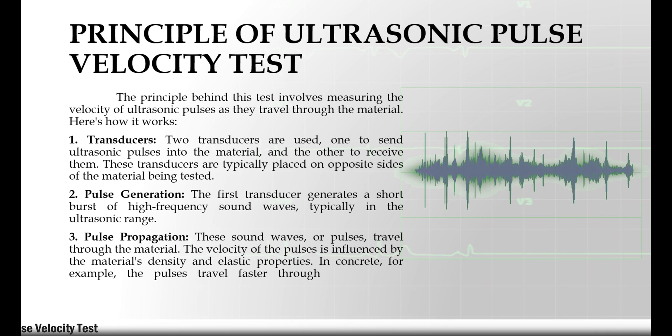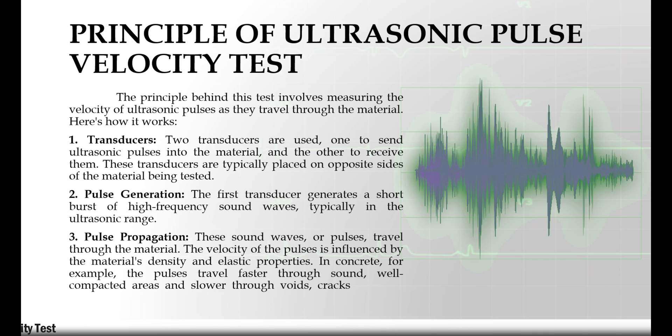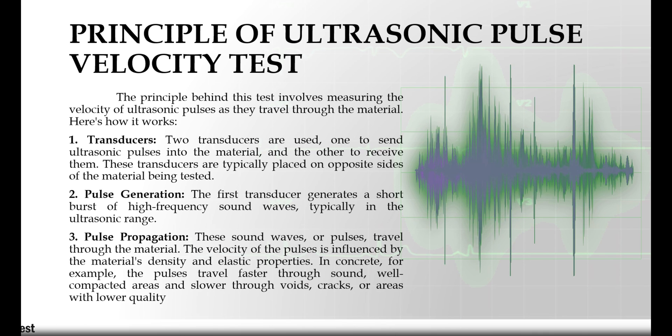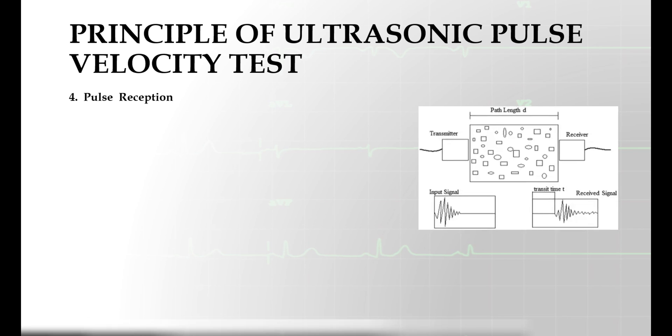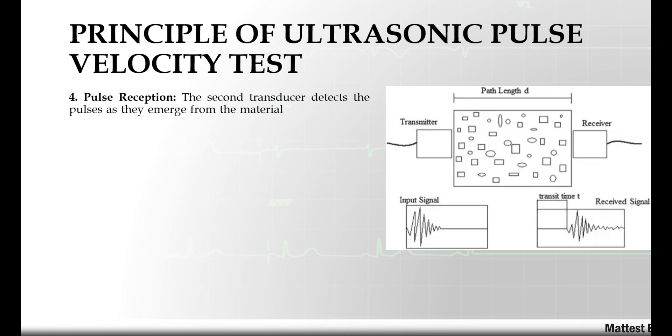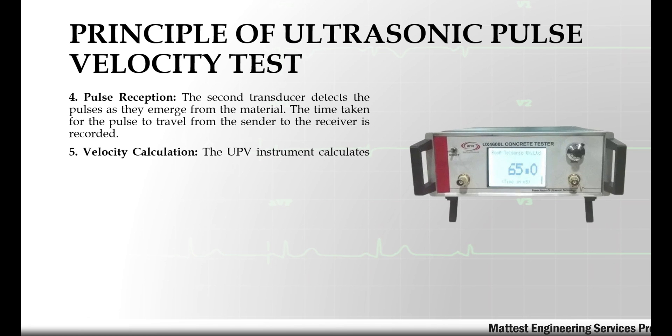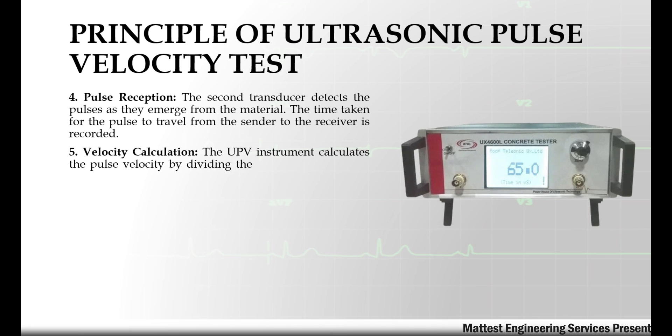Fourth, pulse reception: the second transducer detects the pulses as they emerge from the material. The time taken for the pulse to travel from the sender to the receiver is recorded. Fifth, velocity calculation: the UPV instrument calculates the pulse velocity by dividing the distance between the two transducers by the time it took for the pulse to travel.